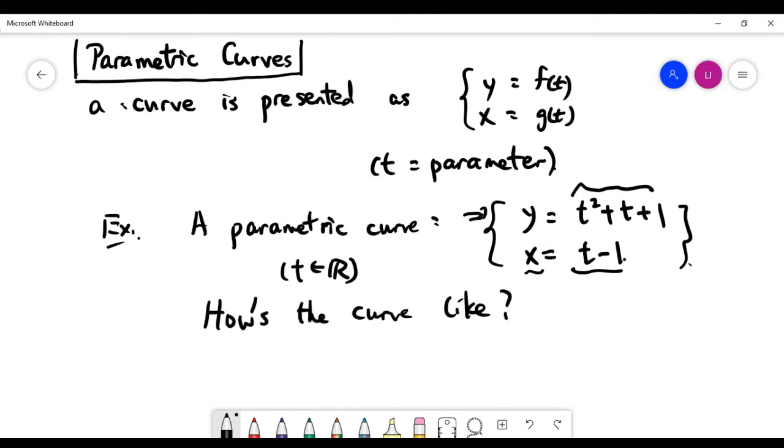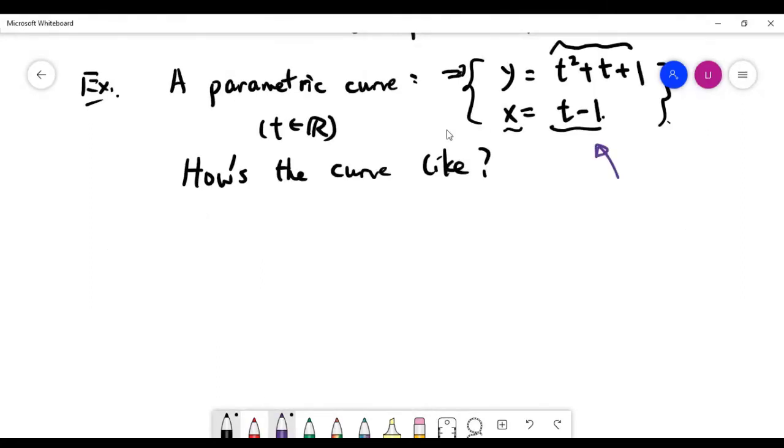I think we can do it by algebra. You're given two equations with three variables: x, y, and t. Algebraically speaking, if you can eliminate t, you would be able to get the equation in only x and y. In that case, maybe you can make a good guess what kind of curve it is. If you think of the two equations as equation 1 and equation 2, the second equation is pretty good because it looks simple.